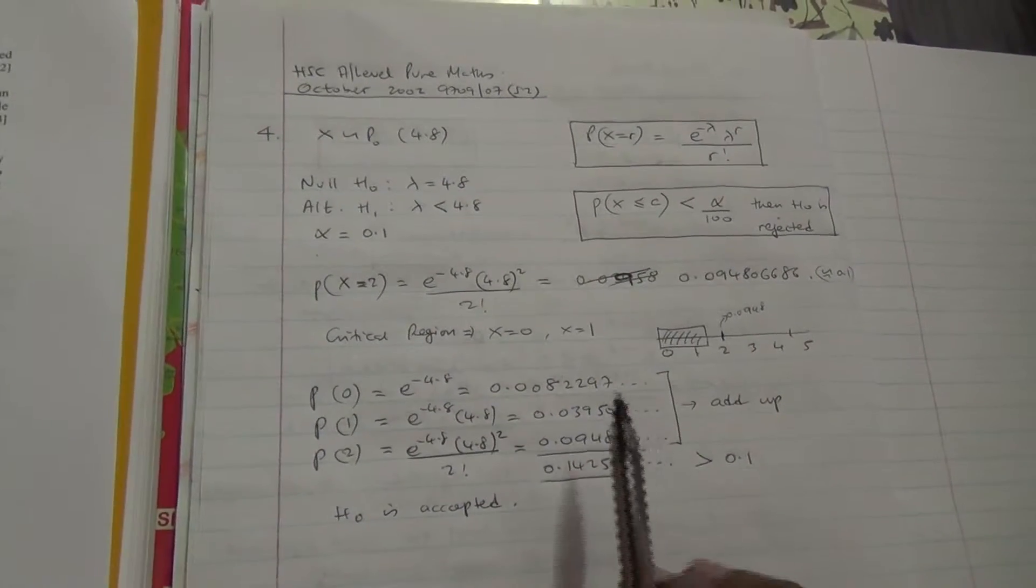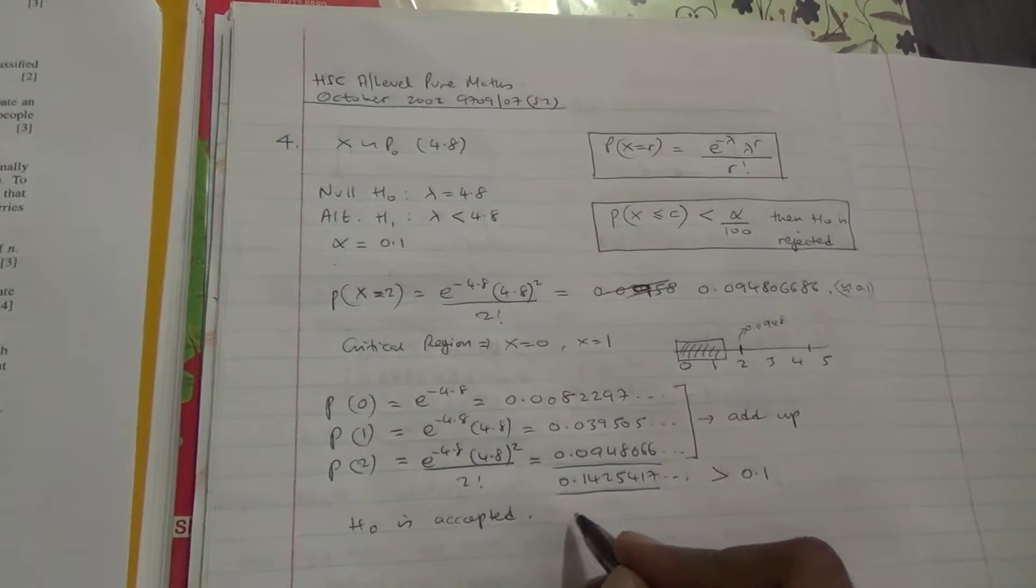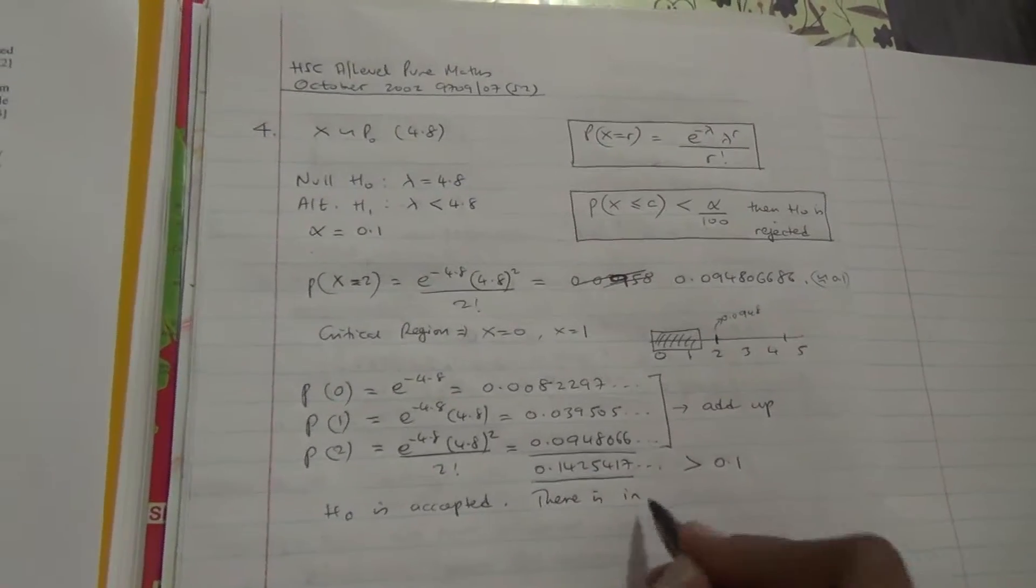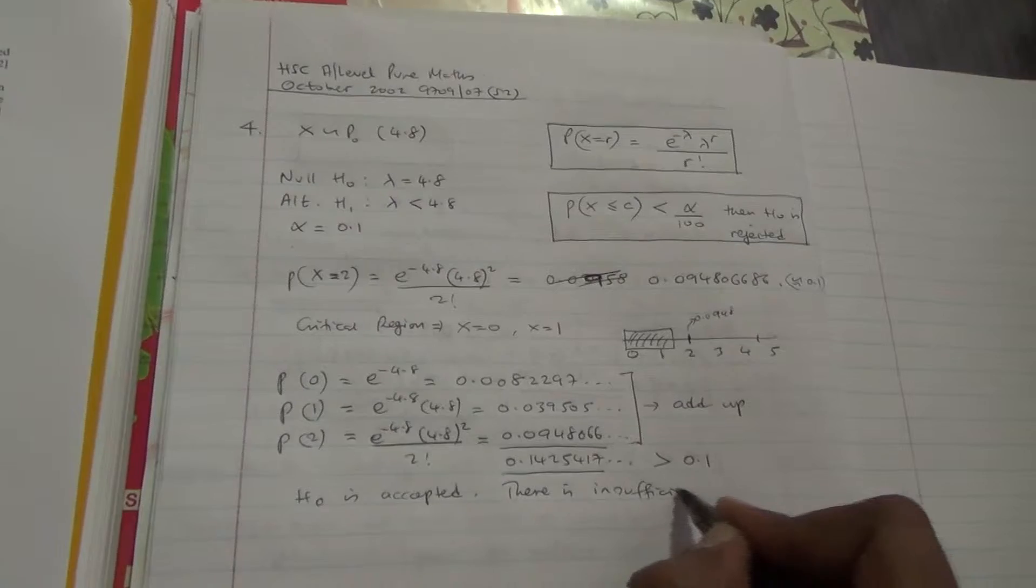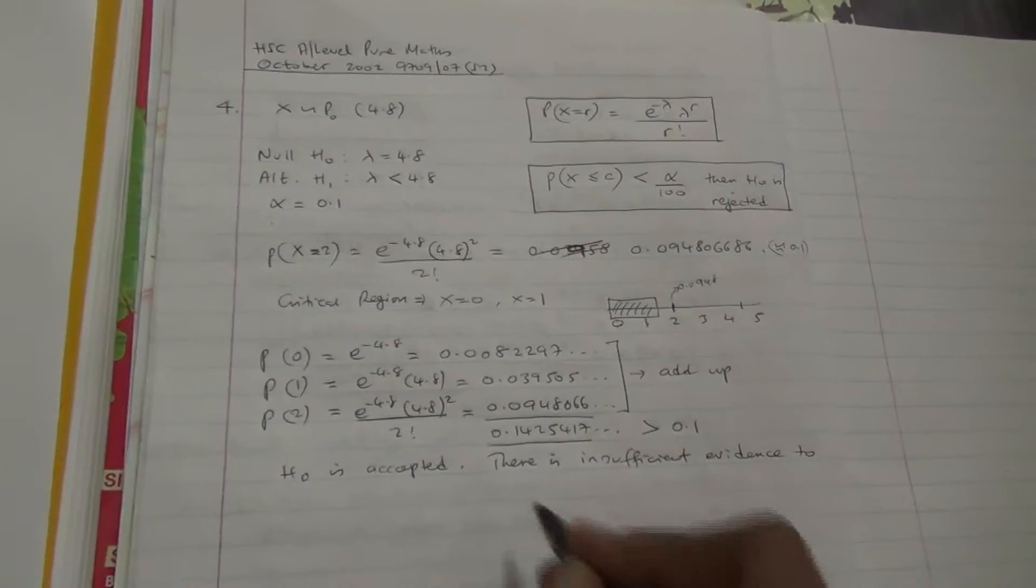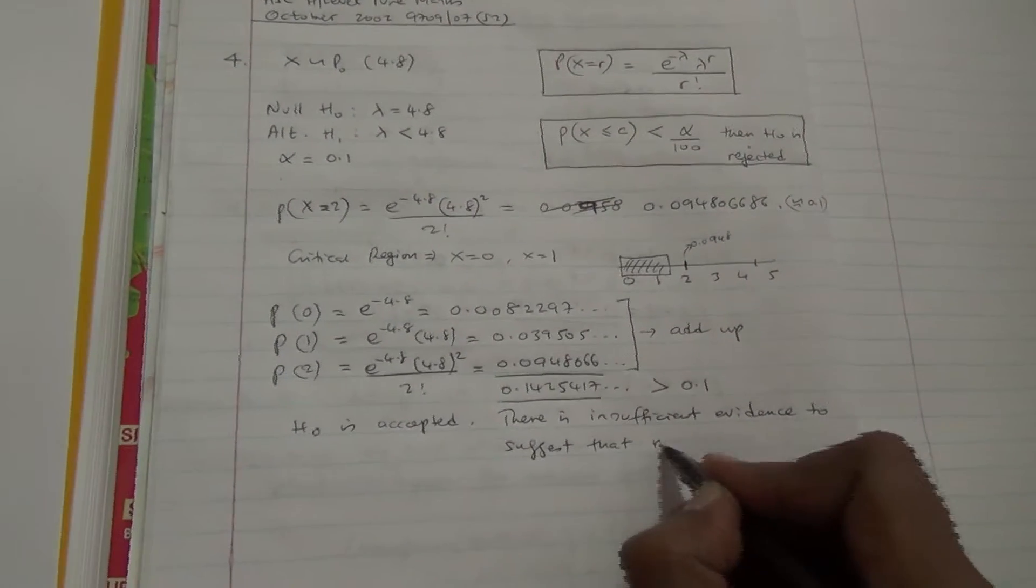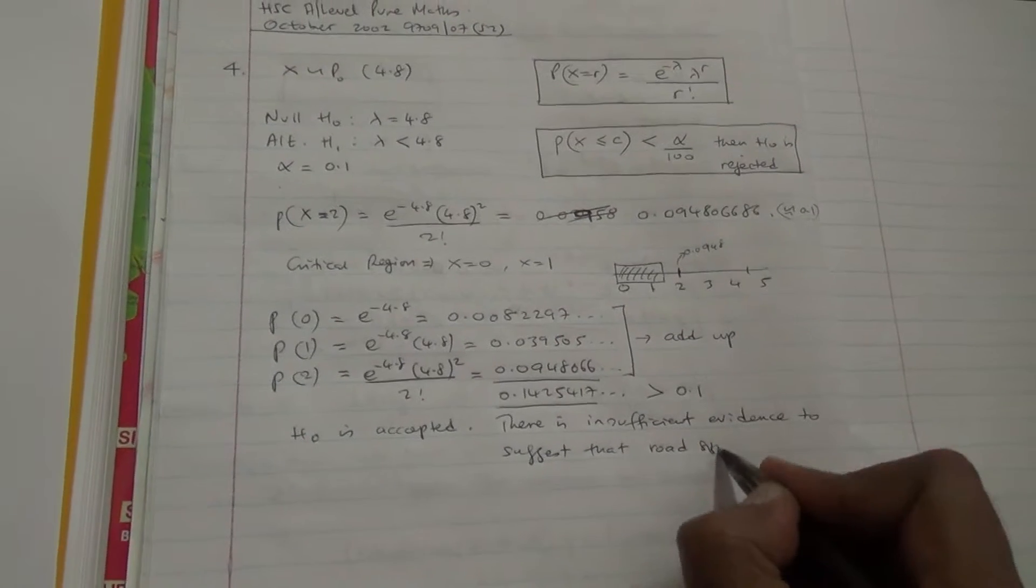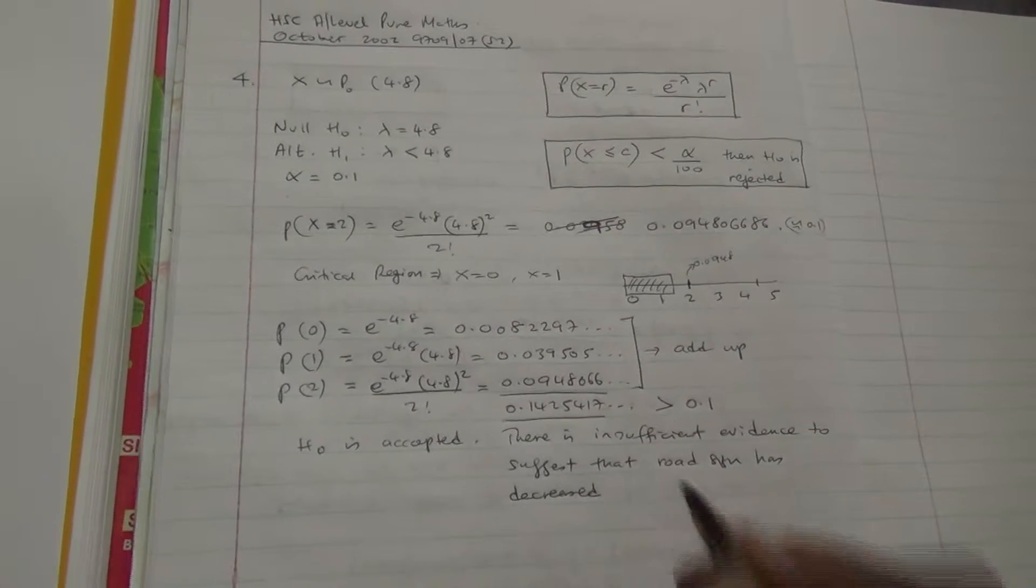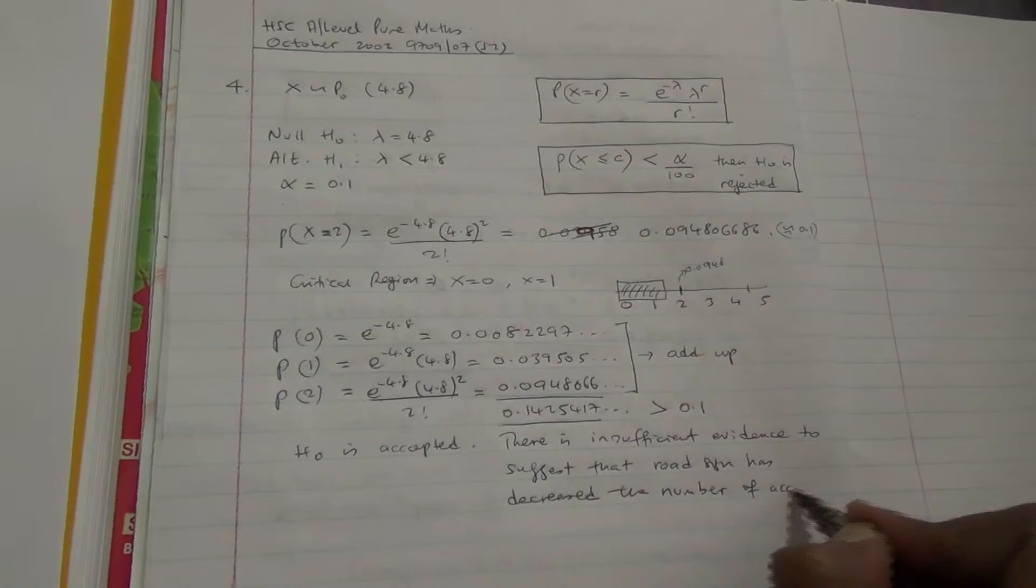The claim is accepted that the accident is 4.8 per month, but not less than 4.8. Therefore, we can conclude that there is insufficient evidence to suggest that road sign has decreased the number of accidents.